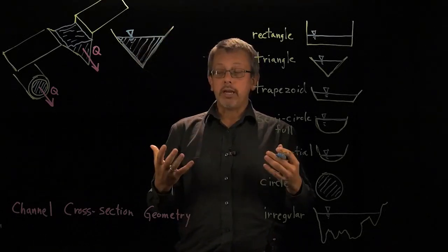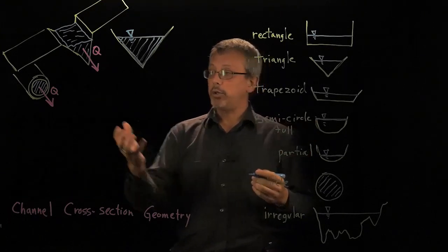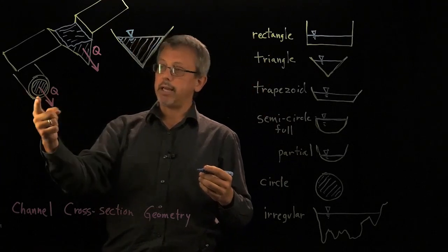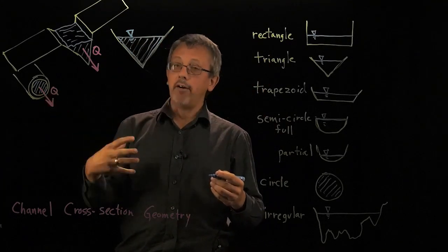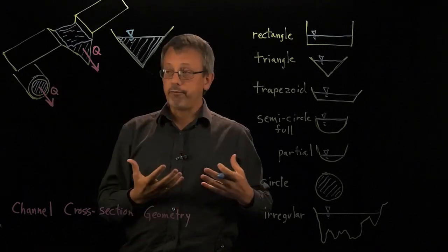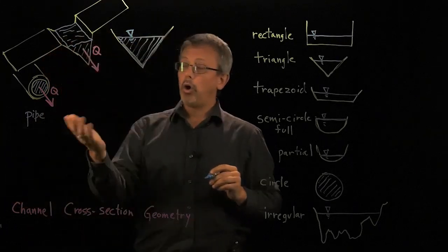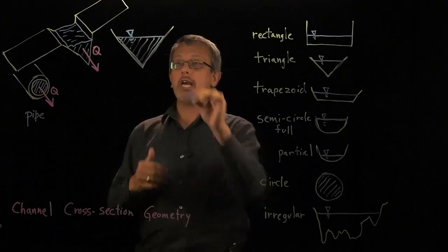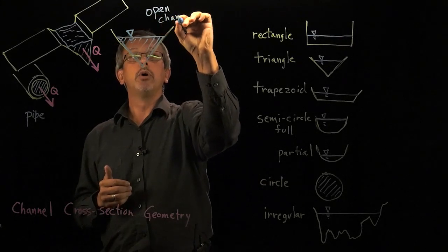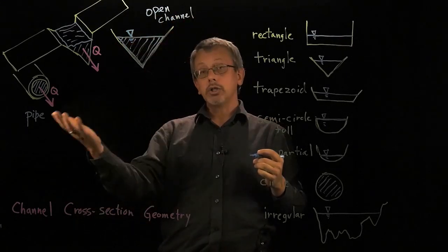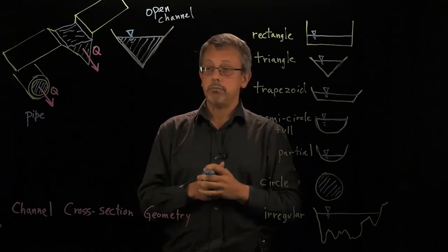An open channel doesn't have a top, and we compare that to a closed conduit — often a pipe — where the water is fully enclosed. A conduit can have pipe flow, where the entire conduit is filled, or open channel flow, which occurs in a channel but can also occur in a pipe if the pipe is only partially filled and you have a free surface.